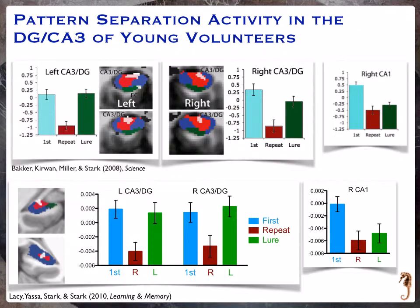This was one technique we used to indirectly get at pattern separation. On the top here we're showing activity localized to the CA3 and dentate subfields of the hippocampus — the white is a zoomed-in region looking at the left and right hippocampus, with color codes for the subiculum in green, CA1 in blue, and CA3/dentate in red. According to computational models and rodent studies, we should see activity consistent with pattern separation in the CA3 and dentate regions, and indeed we saw that. However, in the immediately downstream subfield called CA1, the activity looked much more like a repetition.